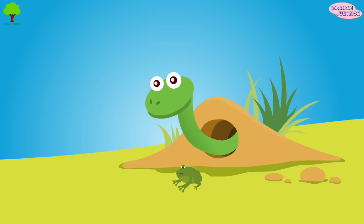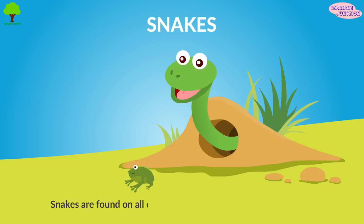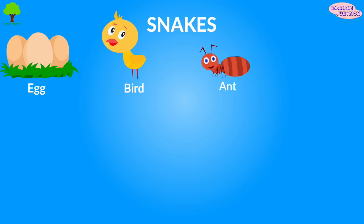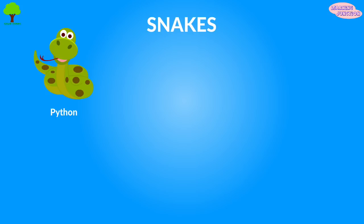Snakes are found on all continents of the world except Antarctica. They have flexible jaws that allow them to swallow larger prey. They eat eggs, birds, ants, frogs, lizards, and other snakes. Some examples of snakes are python, anaconda, black mamba, viper, and cobra.